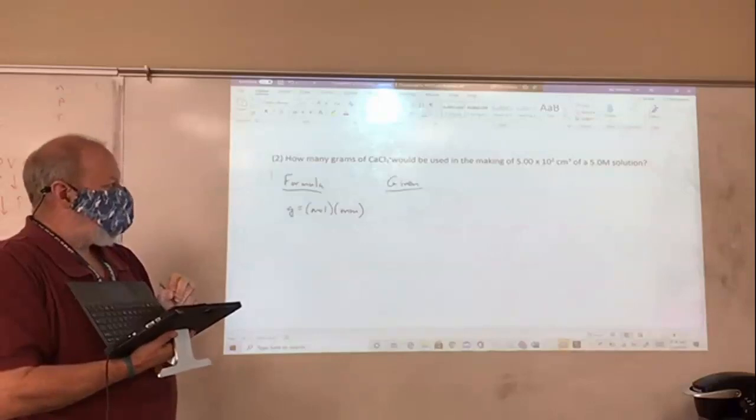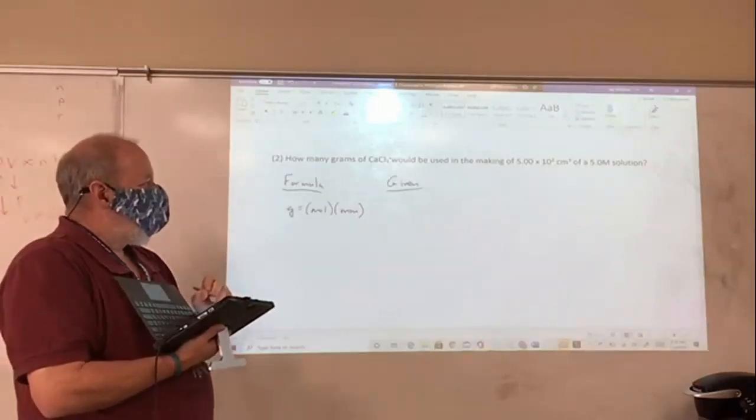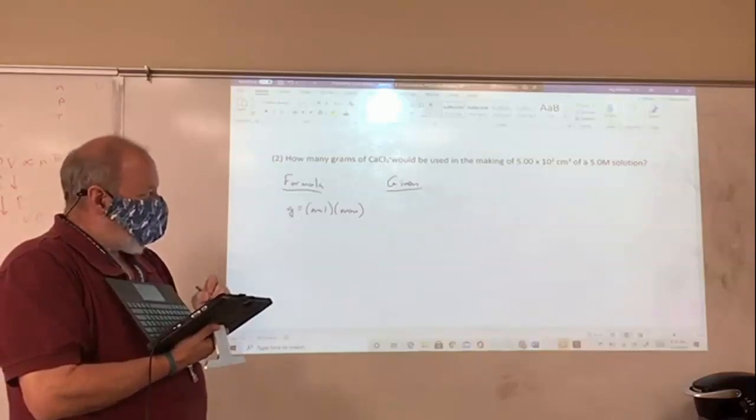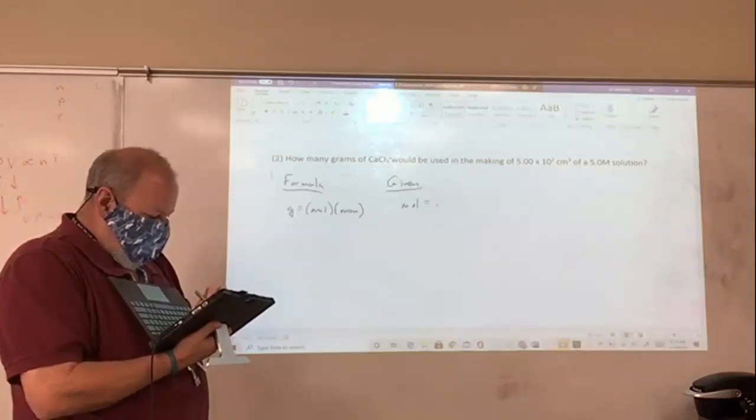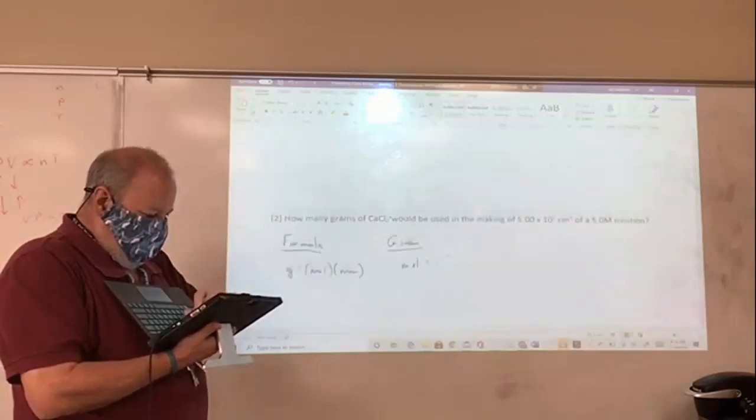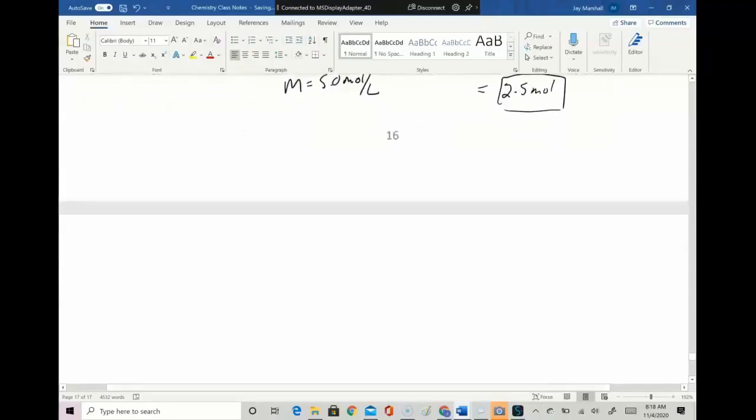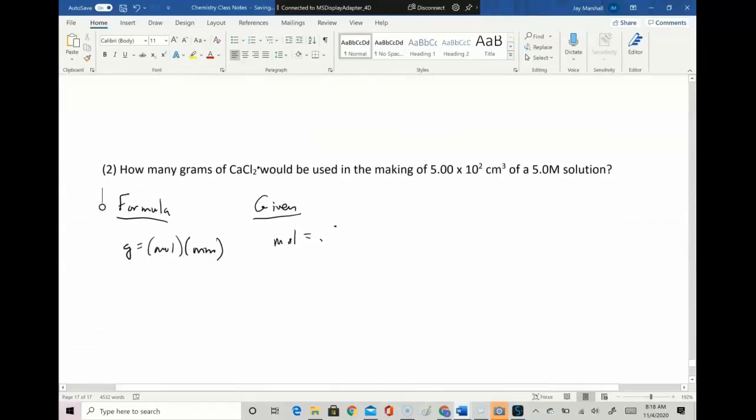And I'm going to write down my given information. I already know from the problem above that moles equals, what did we say, 0.5? 2.5 moles, I'm sorry. So moles of calcium chloride equals 2.5 moles of calcium chloride. I'm going to have to figure out what the molar mass is, but I'll put that under given information anyway, because it's like we're given that information. And so I know that calcium is 40.08.